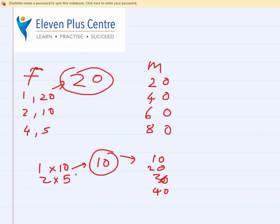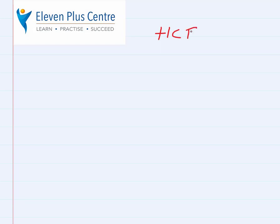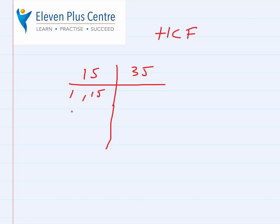Now let's move on to HCF — highest common factor. Let's find the HCF of 15 and 35. We always start with 1. The factors of 15: 1 times 15 is 15; 2 times nothing works; 3 times 5 is 15; 4 doesn't work; 5 times 3 is 15. We go in order — 1, 2, 3, 4, 5 — and stop around 10. So the factors of 15 are 1, 3, 5, and 15.